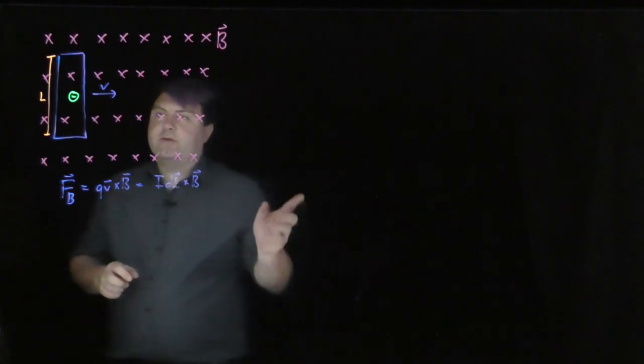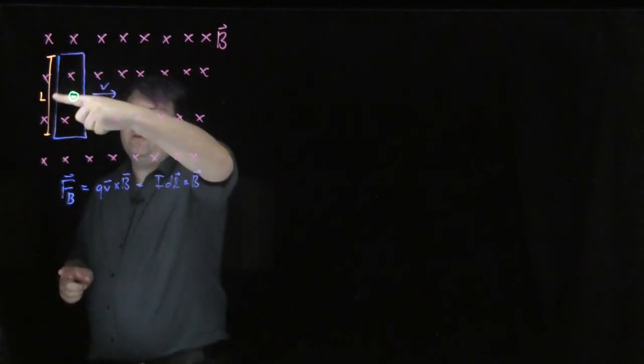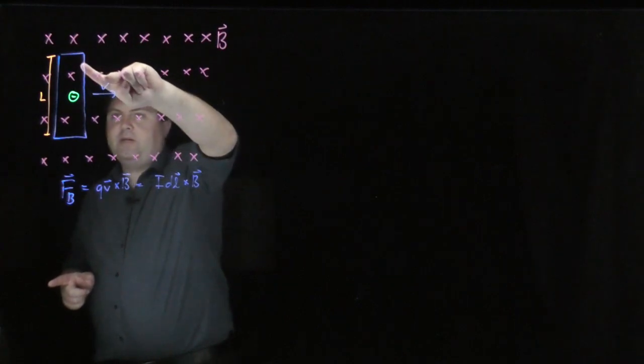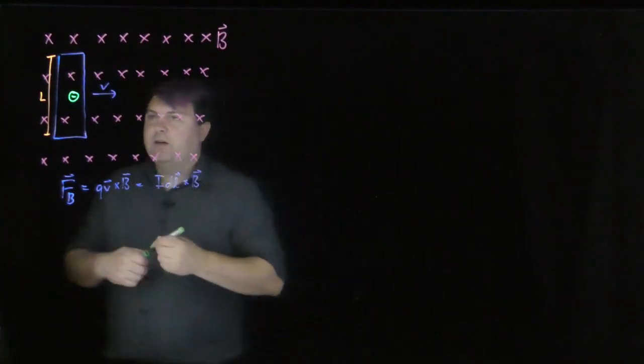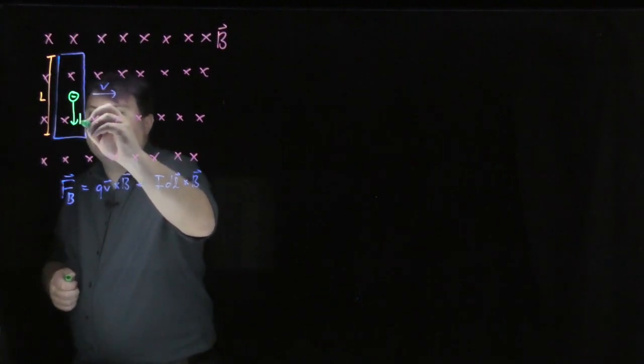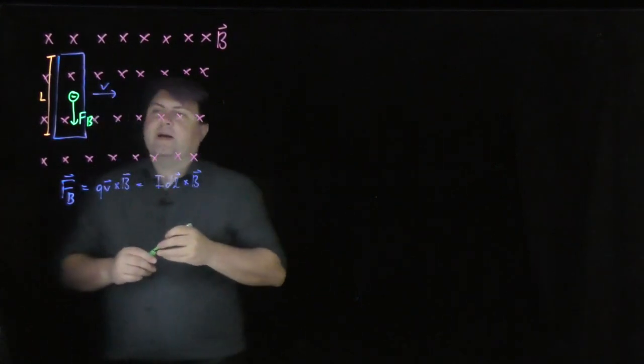So if this is an electron, then it's going to be negative Q. So QV is in this direction, B is pointing into the page, and so our force is going to be downwards. So we're going to have some force magnetic.